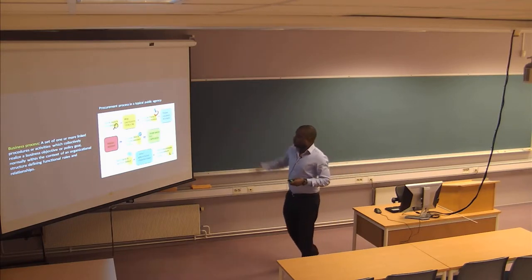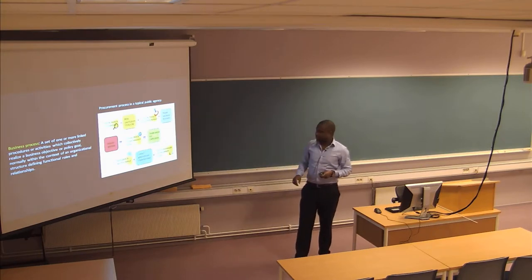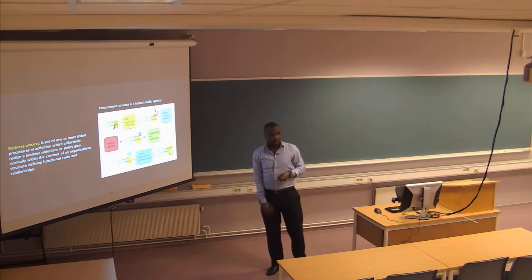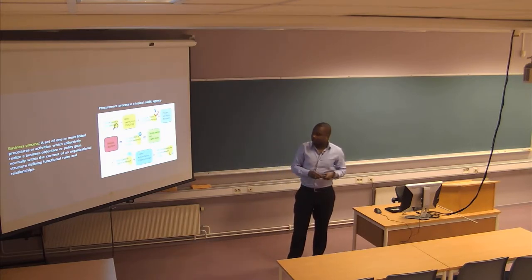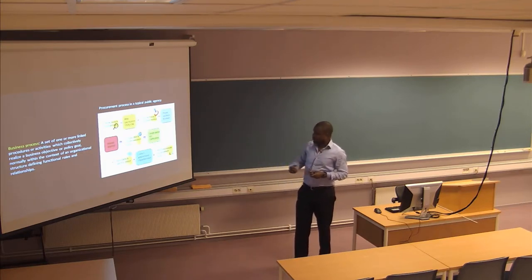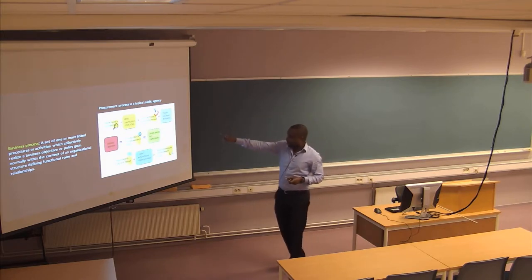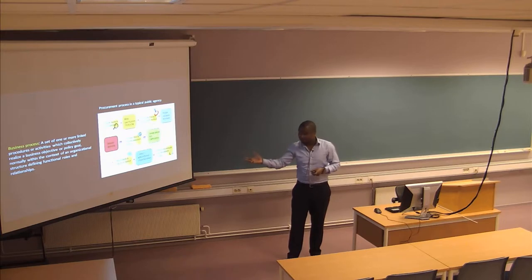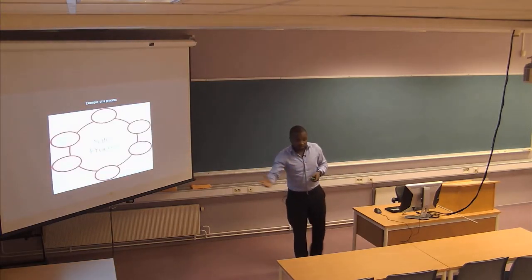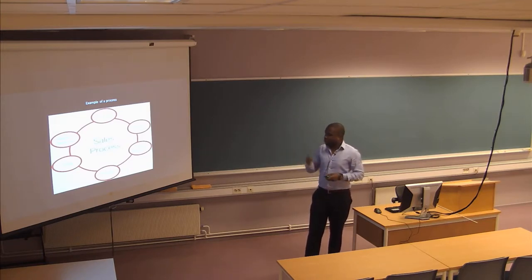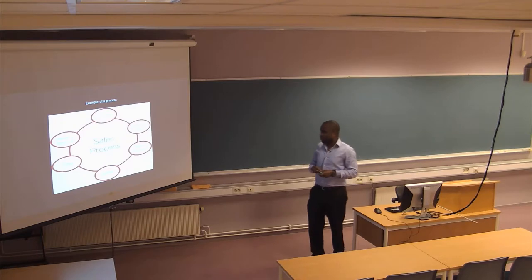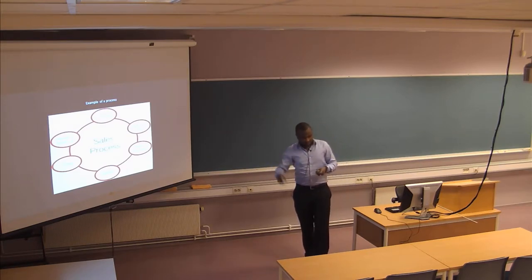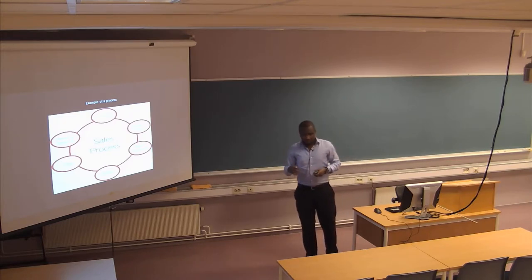This is an example of a typical procurement process in a public agency. It starts from when they identify the need, write the specifications of what they want suppliers to deliver, make selection of suppliers, and receive documents from those suppliers — all the way until the services are acquired. You can also have a sales process, from finding interested customers and approaching them to persuading them to buy until the transaction is completed.